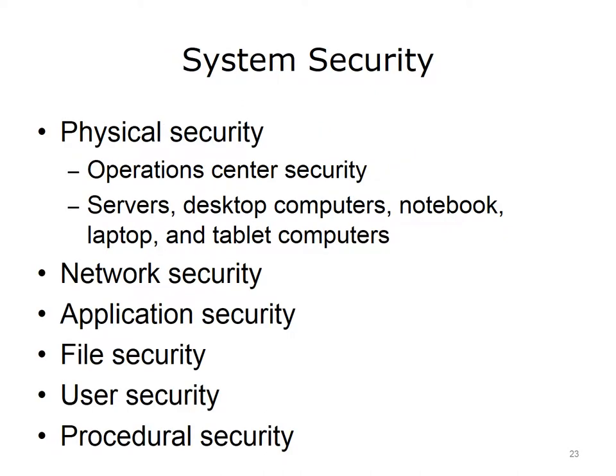Security is a crucial component of all systems. It involves several aspects. One is information security. Another aspect is physical security, which is the protection of physical assets such as computer systems, network hardware, and storage media. This includes protection not just from intruders, but also from natural causes such as fire and floods. For operations center security, physical access must be tightly controlled and each entrance must be equipped with appropriate security devices such as ID badges or biometric scanning systems. Secure operating systems, locks, backups, tracking software, engraving, and stringent passwords all help to guard servers, desktop computers, and notebook, laptop, and tablet computers.